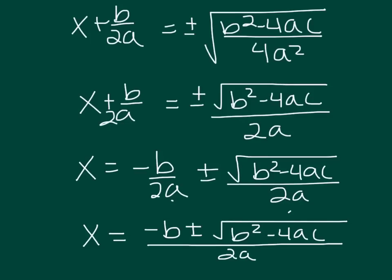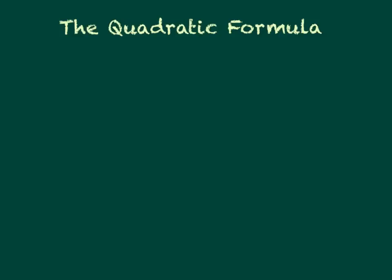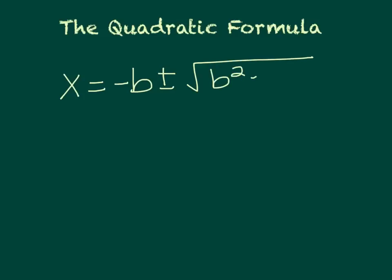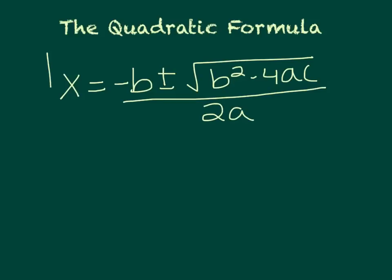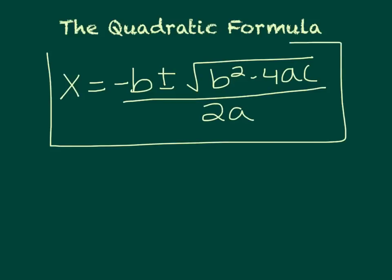That looks vaguely familiar — I think I've seen that before somewhere. So that brings us to today's video about the quadratic formula, and the quadratic formula goes like this: x equals negative b plus or minus the square root of b² minus 4ac, all over 2a. And now we know where it came from.